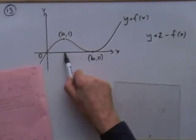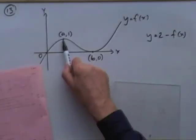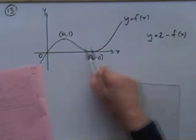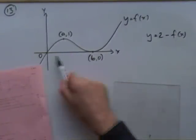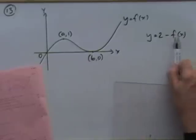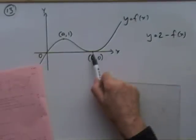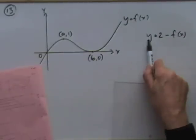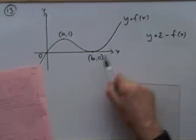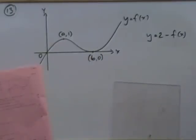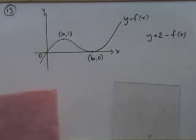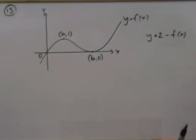This point: its x position stays at a, but instead of being at y=1, it'd be 2 minus 1, which is still 1. And the point at b stays at x=b, but its new y coordinate would be 2 minus its old one, so its new y coordinate would be 2. That's doing it numerically using the rule.